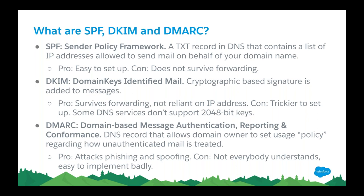DKIM — DomainKeys Identified Mail — applies a cryptographic signature. You don't see it; it's in a hidden header. That signature is a sort of checksum — a calculation that says this message really came from bob.com and hasn't been modified in transit. It's not based on IP addresses, it's based on domain names. The downside is it can be a little trickier to set up — it involves more DNS knowledge, you have to paste a public key into the DNS record, and some DNS tools don't fully support how DKIM works.